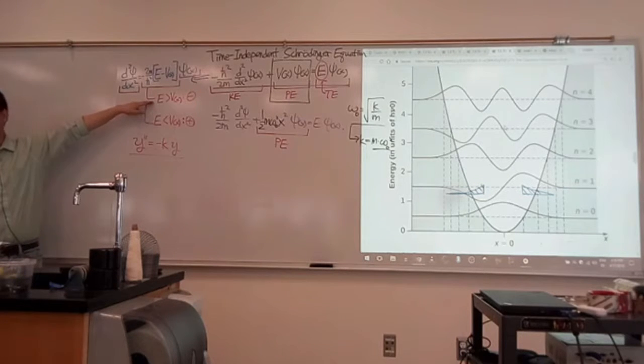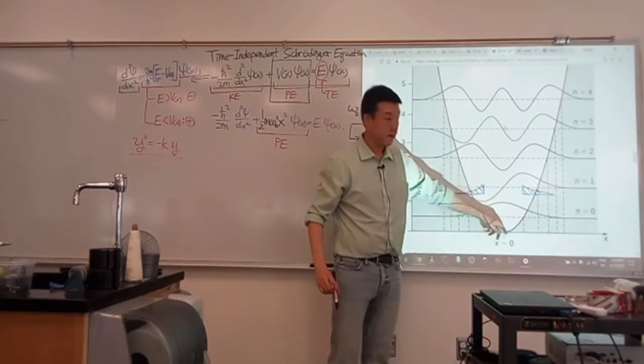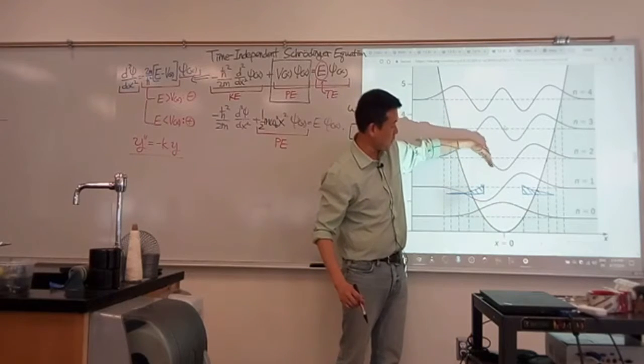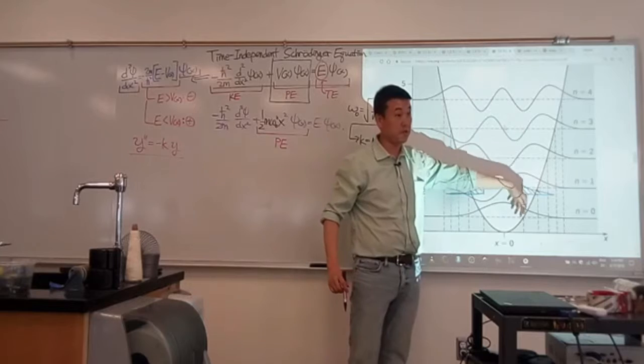In this case, you get an oscillatory solution. You can kind of think of it as the wave. It bends, always bends towards the zero. When it's above here, it bends down towards the zero. And when it goes past the zero, it bends back up towards zero. That kind of behavior leads to oscillation up and down.